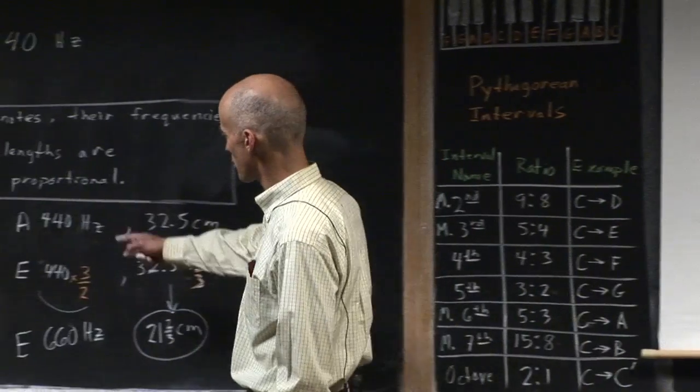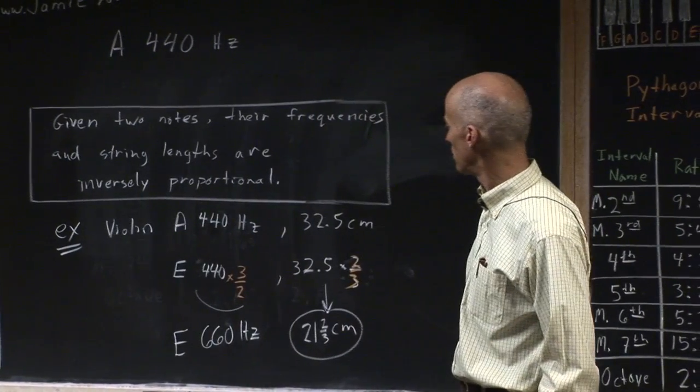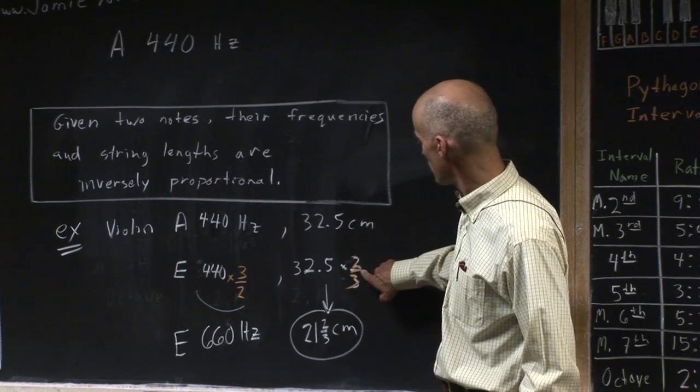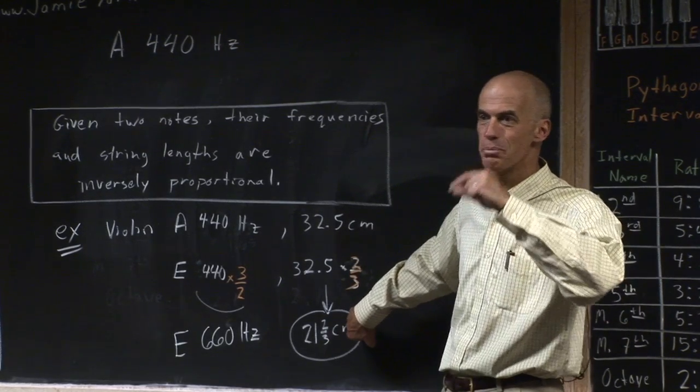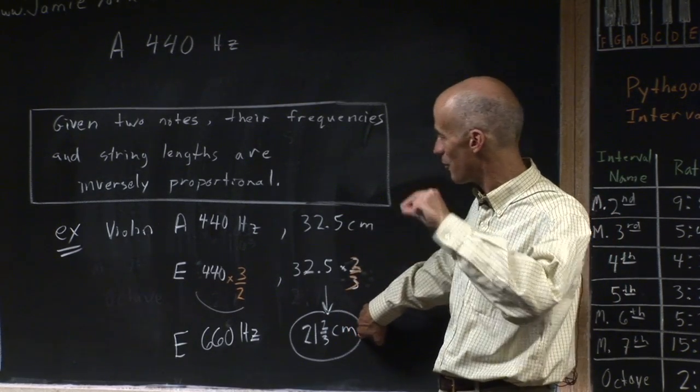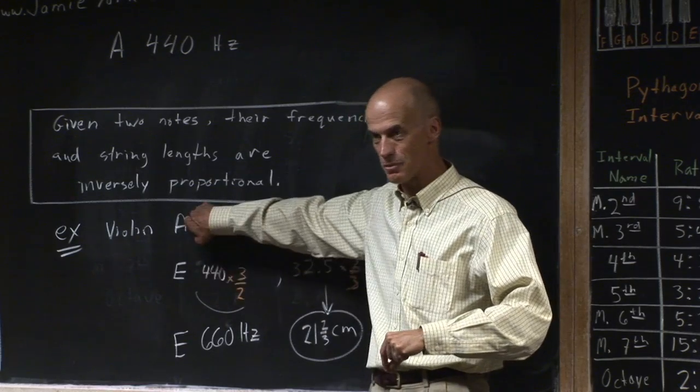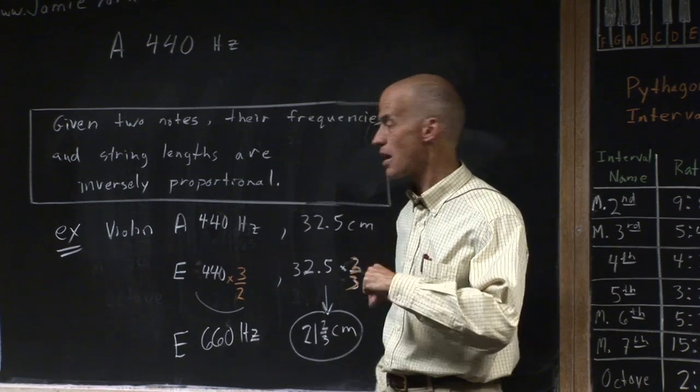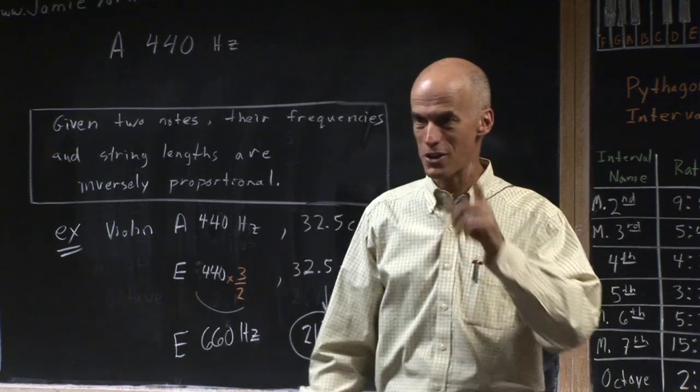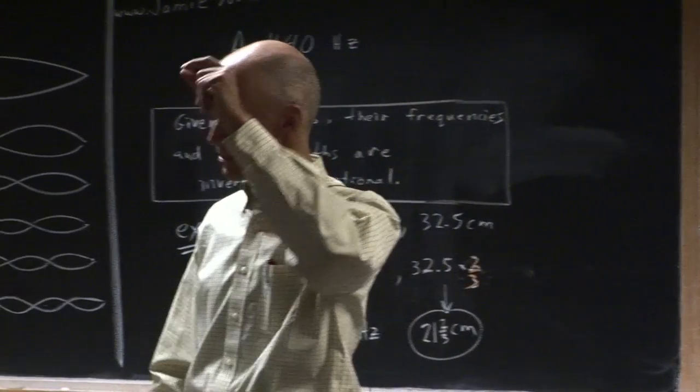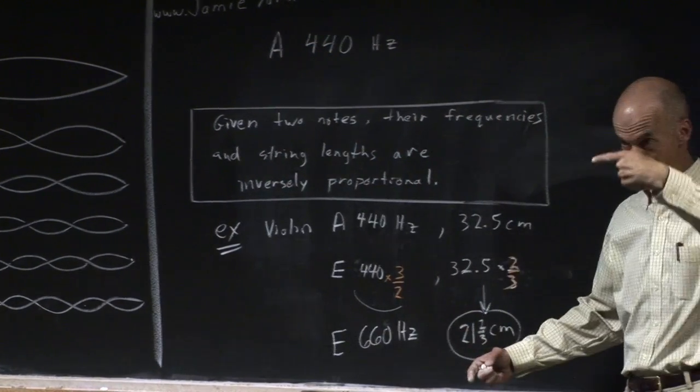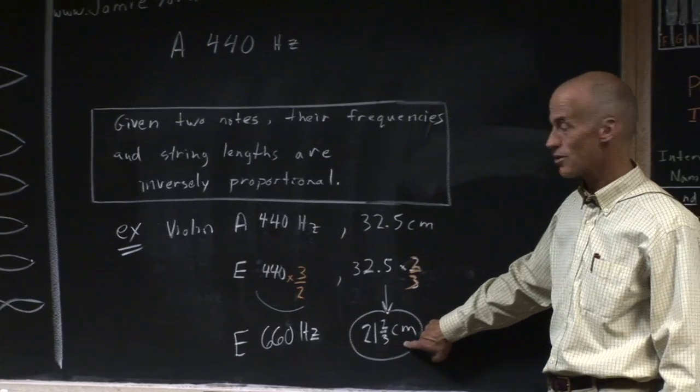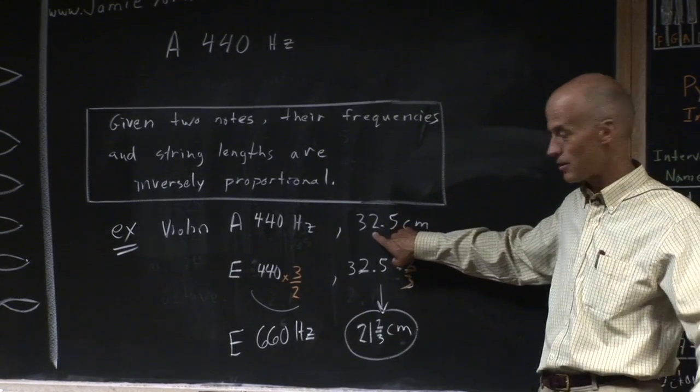We can actually do those calculations quite nicely. On the A string, we multiplied by two-thirds to find out the length, to find out where we need to press to get a fifth above, from A to E, if you're on the same string.